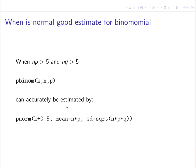The normal distribution can approximate the binomial distribution when n times p and n times q are both greater than 5. To find the probability of getting a score of k or less in a binomial distribution of size n with probability p, we approximate it with pnorm at k plus 0.5, using a mean of n times p and a standard deviation equal to the standard deviation of that binomial distribution.